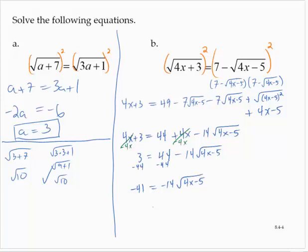All right, so now continuing to isolate that radical, I will divide by negative 14. Negative divided by negative is positive. So I have 41 over 14 is equal to the square root of 4x minus 5.